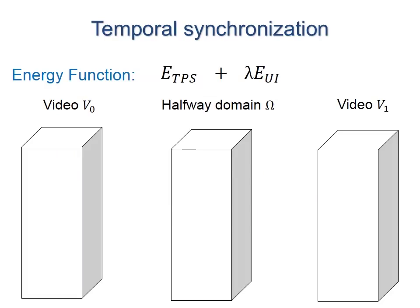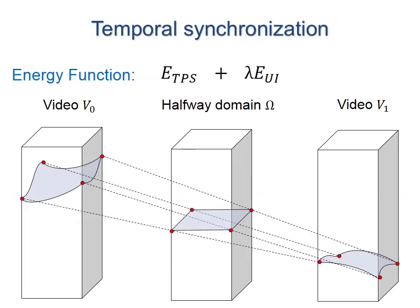The first stage temporally advects pixels in the two input videos to synchronize their motions. The 3D optimization considers both the user correspondences and a smoothness term based on thin plate splines. Note that spatial positions of the pixels do not change, and different pixels within the same frame may be temporally advected to different frames in the synchronized video. Please refer to the paper for details on the optimization.